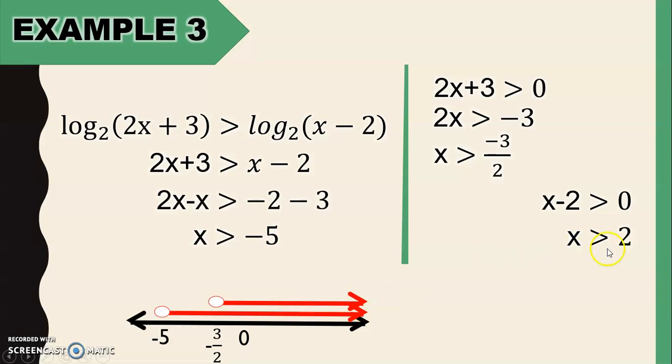Then last, let's graph x greater than 2. So let's plot first 2. Then, it doesn't have an equal sign. Therefore, open circle. 2 is not included in the solution. Greater, so the direction is to the right. So this is now the graph of x greater than 2.